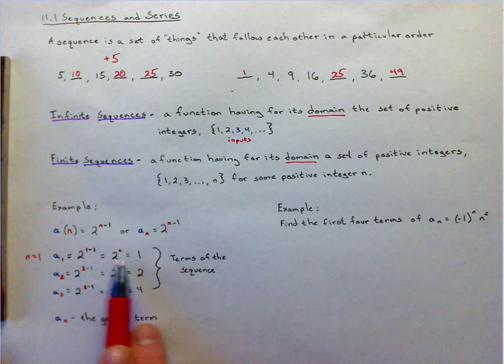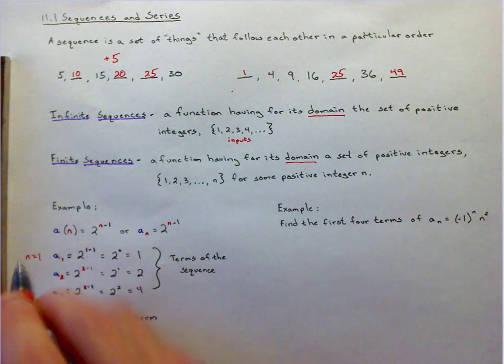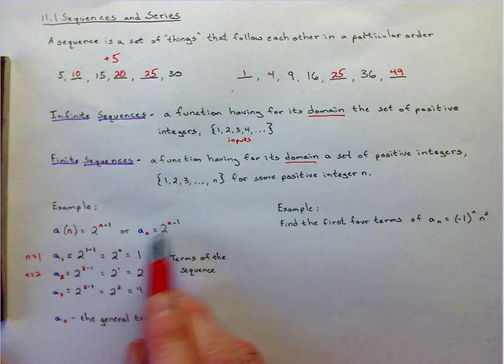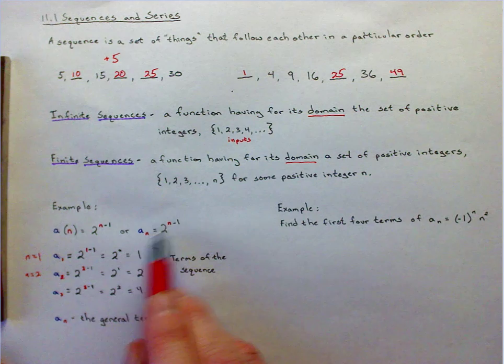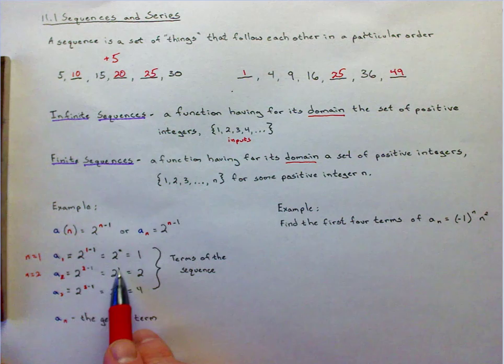So whenever n is 1, a sub n equals 1, or a sub 1 equals 1. Whenever n equals 2, that means everywhere there's an n, I'm going to plug in a 2. So a sub 2 equals 2 to the 2 minus 1, which is simply 2 to the first power, which equals 2.